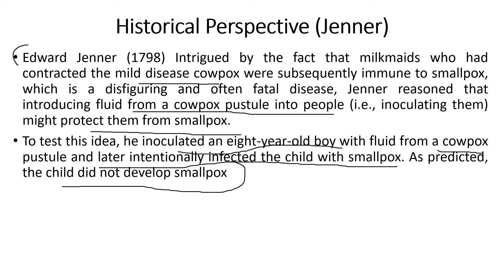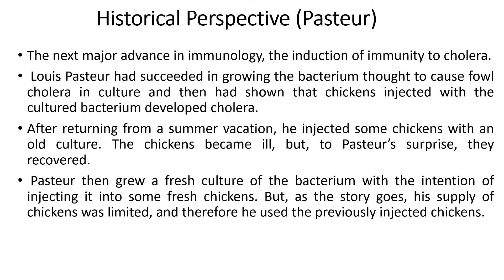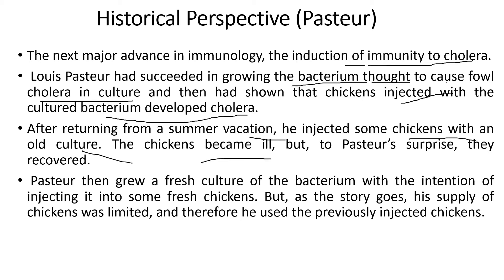The next major advance in immunology was the induction of immunity to cholera. Louis Pasteur was the man who succeeded in growing the bacterium thought to cause fowl cholera in culture and showed that chickens injected with the cultured bacterium developed cholera. After returning from summer vacation, he injected some chickens with an old culture — the chickens became ill but, to Pasteur's surprise, they recovered and did not die.